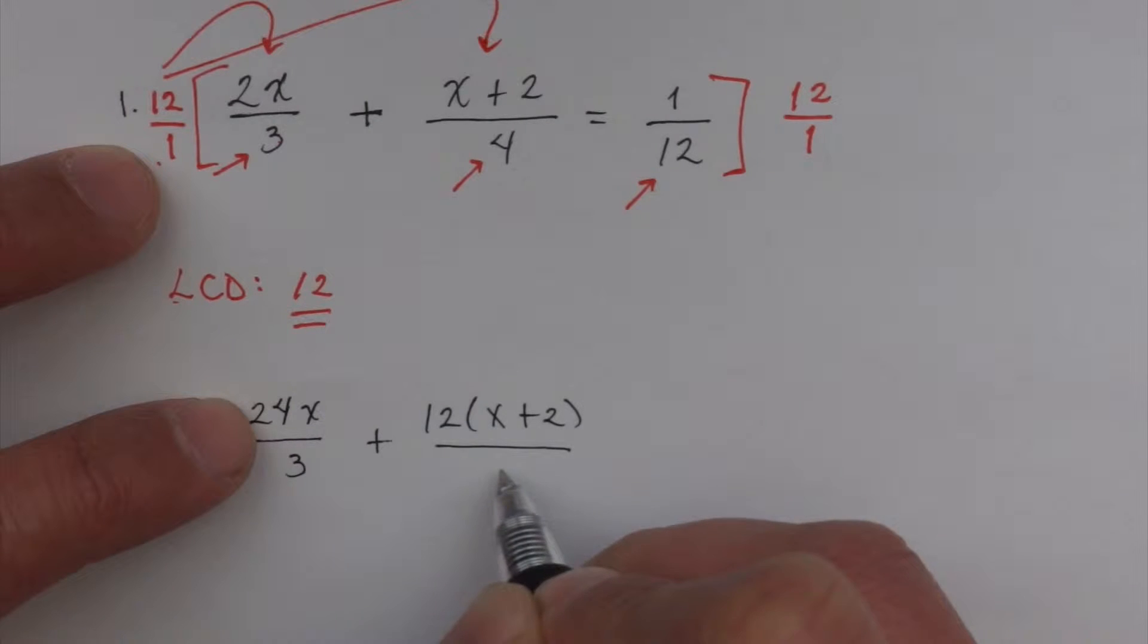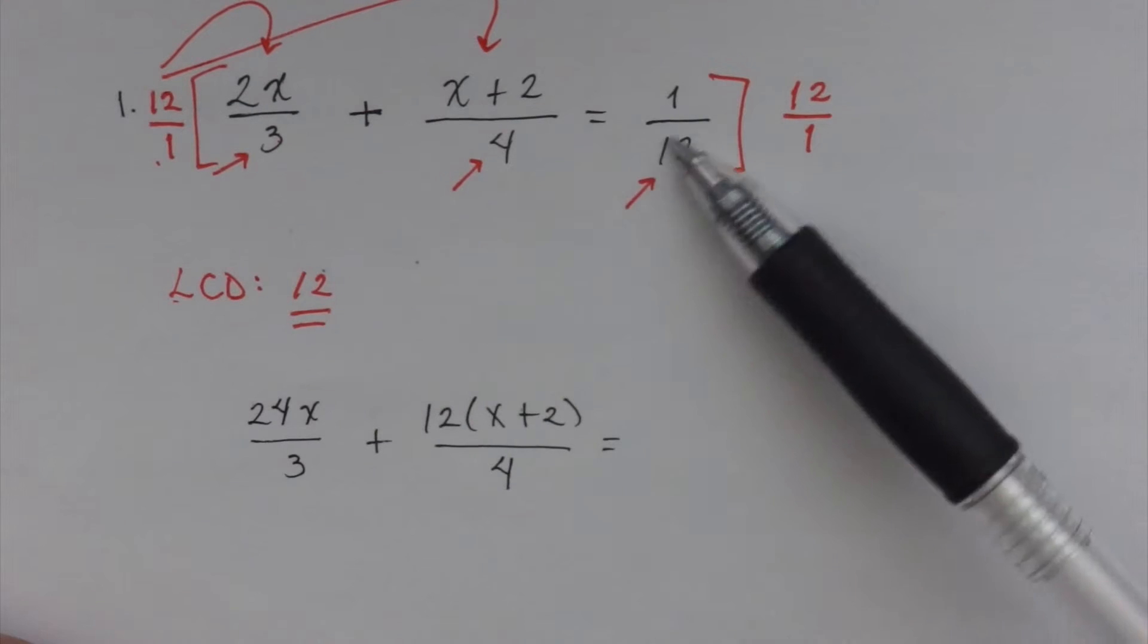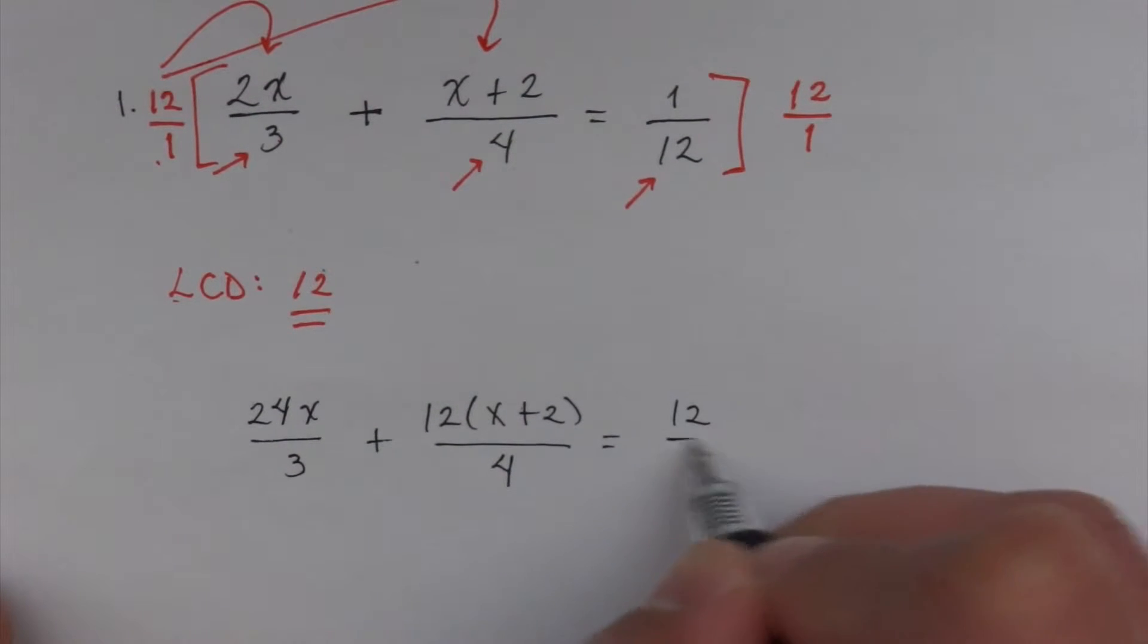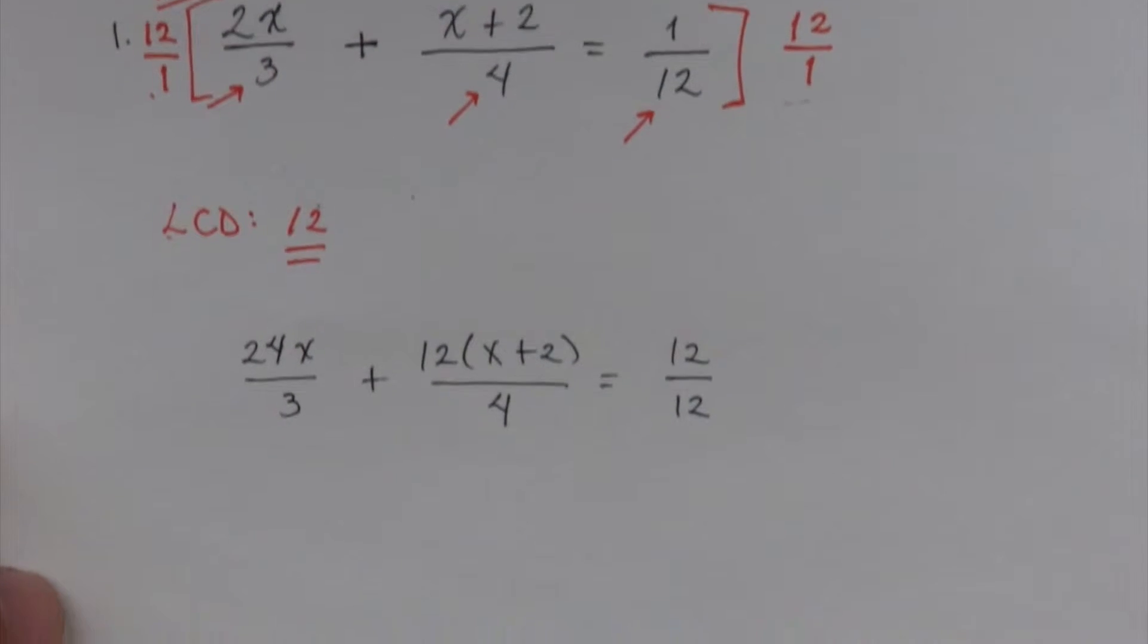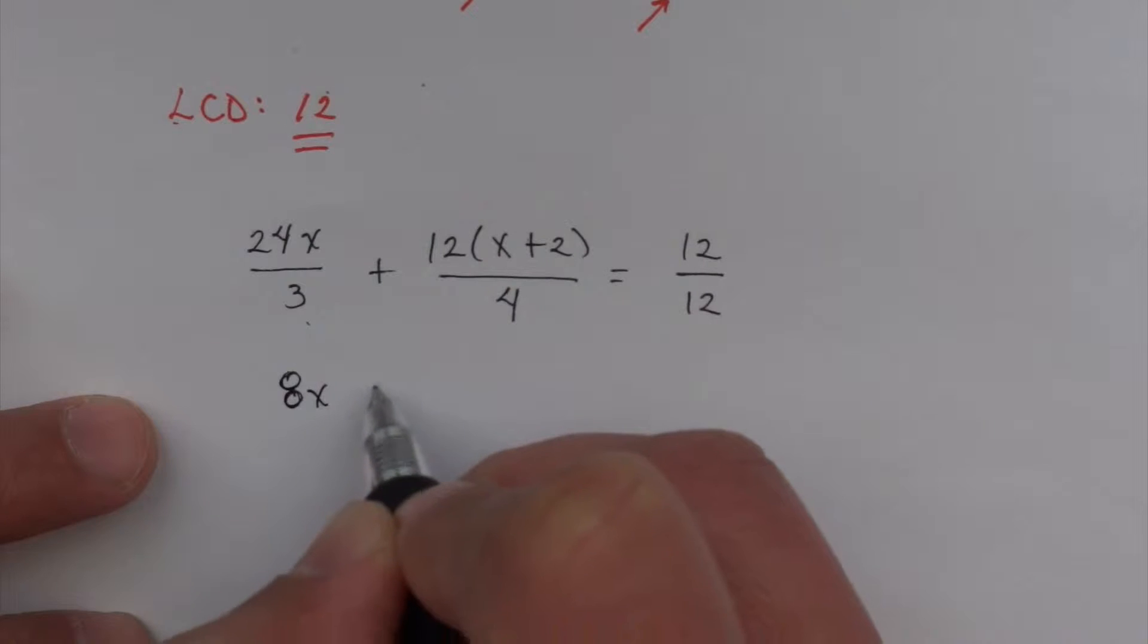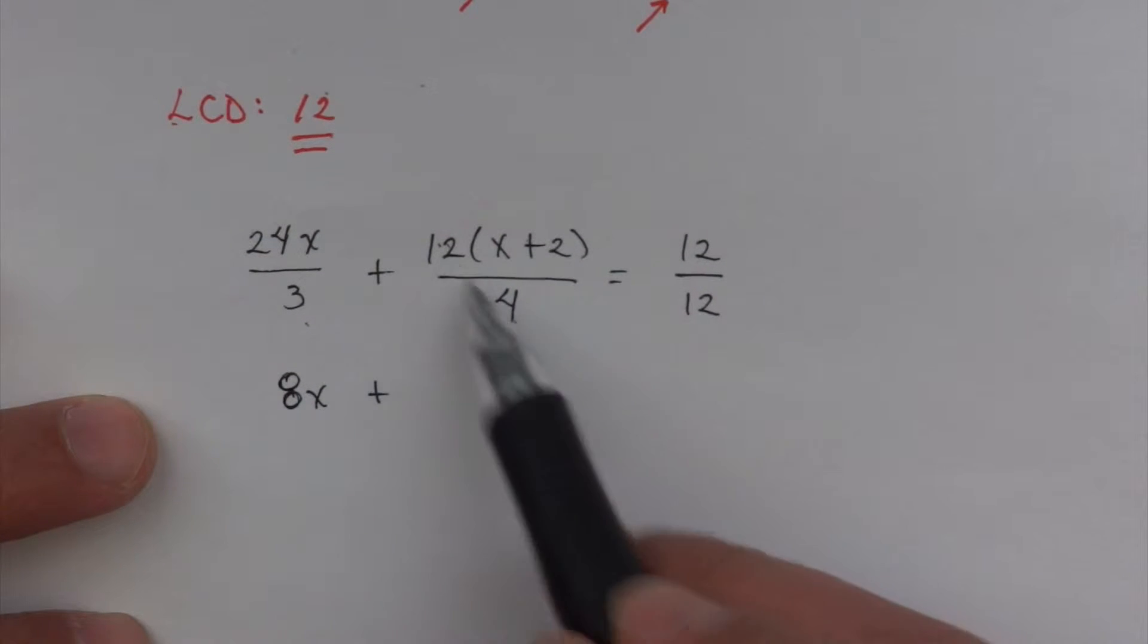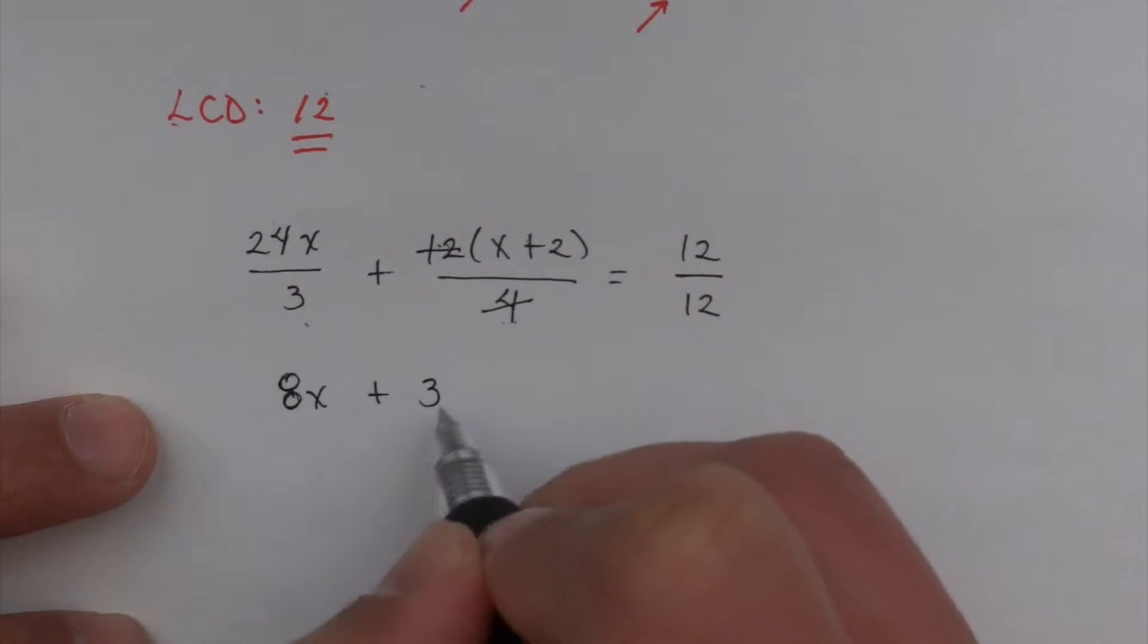Equals, now I got the right side over here. 1 times 12 is 12, 12 times 1 is 12. Now I can go ahead and simplify. I know I'm just doing the long way, just bear with me. 24 divided by 3 is 8x. Plus, now here 12 and 4, these are on the outside, these are monomials, so I can divide that. What's 12 divided by 4? 3.